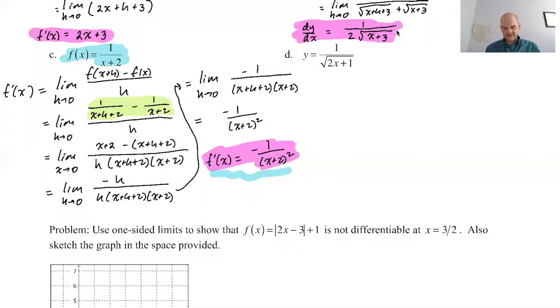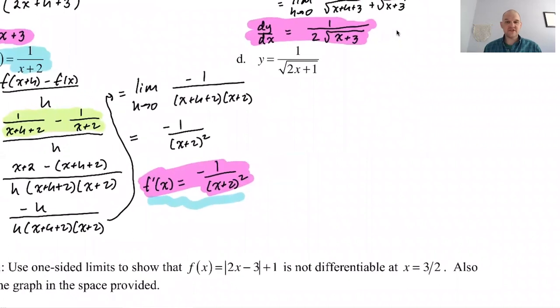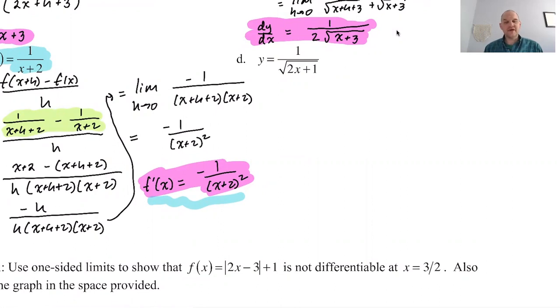All right, we're back. Calc AB, notes one, page one. Here we go. We're using the limit definition of the derivative to find the derivative of this function. Y is equal to one over radical 2x plus one.